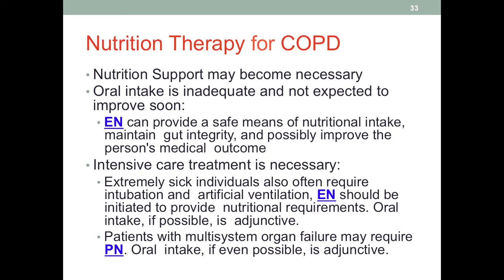For patients with multiple system organ failure — where respiratory failure could be one of the failures we see — we have to use parenteral nutrition, because high metabolic stress could lead to GI disturbances including stress ulcers, which may make tube feeding impossible or not appropriate at the moment.